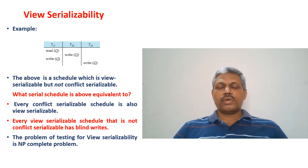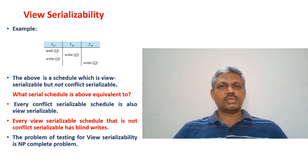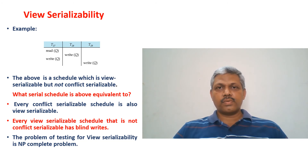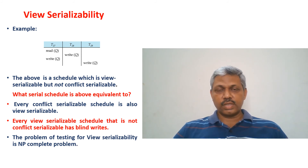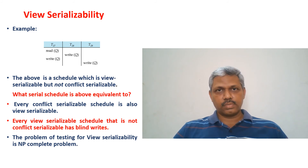When it comes to verifying view serializability — identifying whether a schedule is view serializable or not — it is an NP-complete problem, and no polynomial-time solution exists. In contrast, for conflict serializability, good algorithms exist to identify precedence cycles in precedence graphs, operating in O(n²) or O(n + e) time. But for view serializability, no polynomial-time algorithms exist.